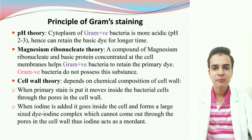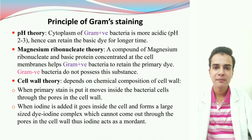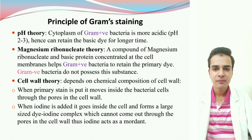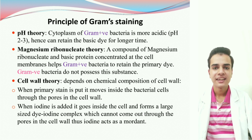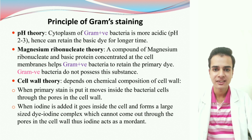Regarding the principle of Gram Staining, three theories have been proposed. First is the pH theory. According to this theory, the cytoplasm of the Gram-positive organisms is highly acidic in nature — that is, the pH lies in the range of 2 to 3 — and the dyes we are using are basic in nature. That is the reason why the Gram-positive organisms can easily retain the primary stain.